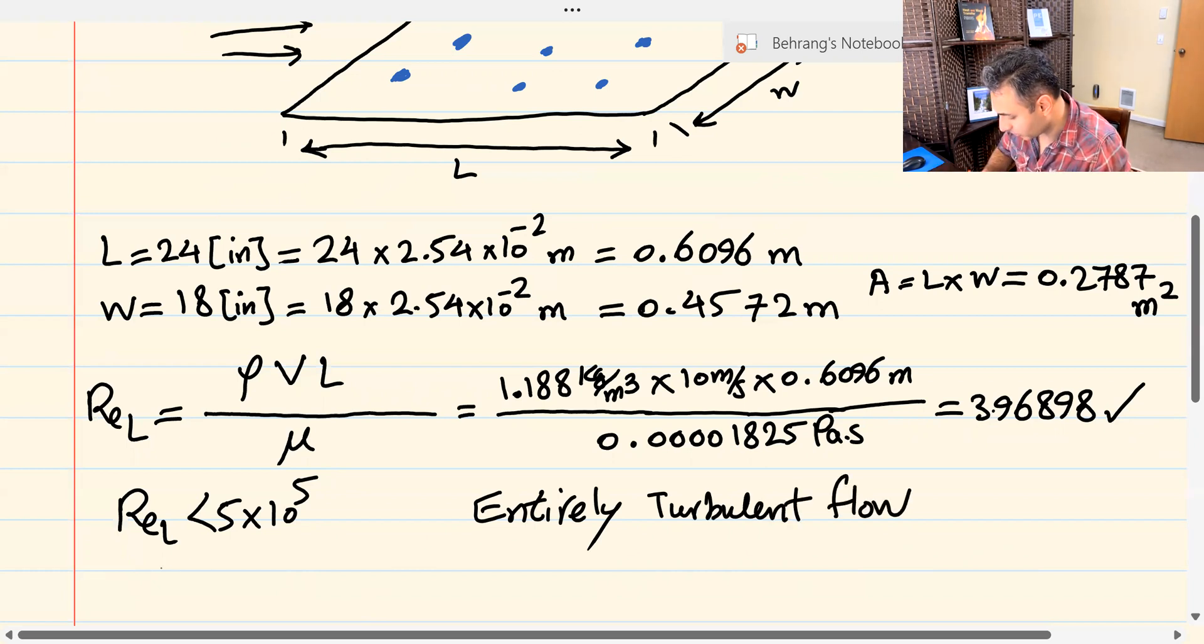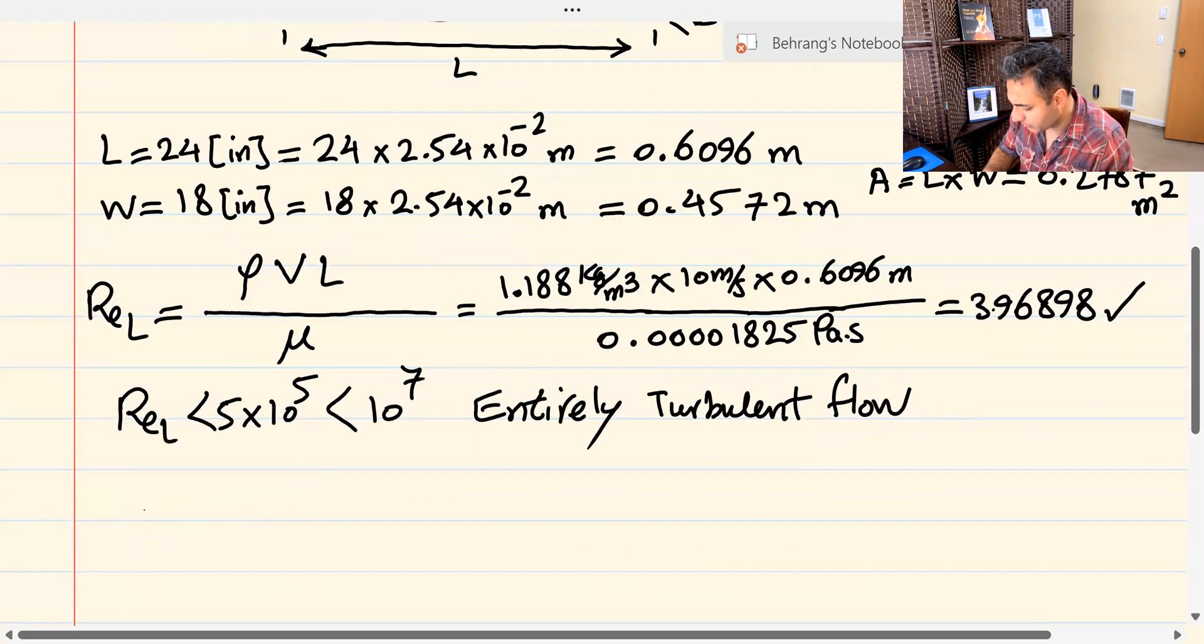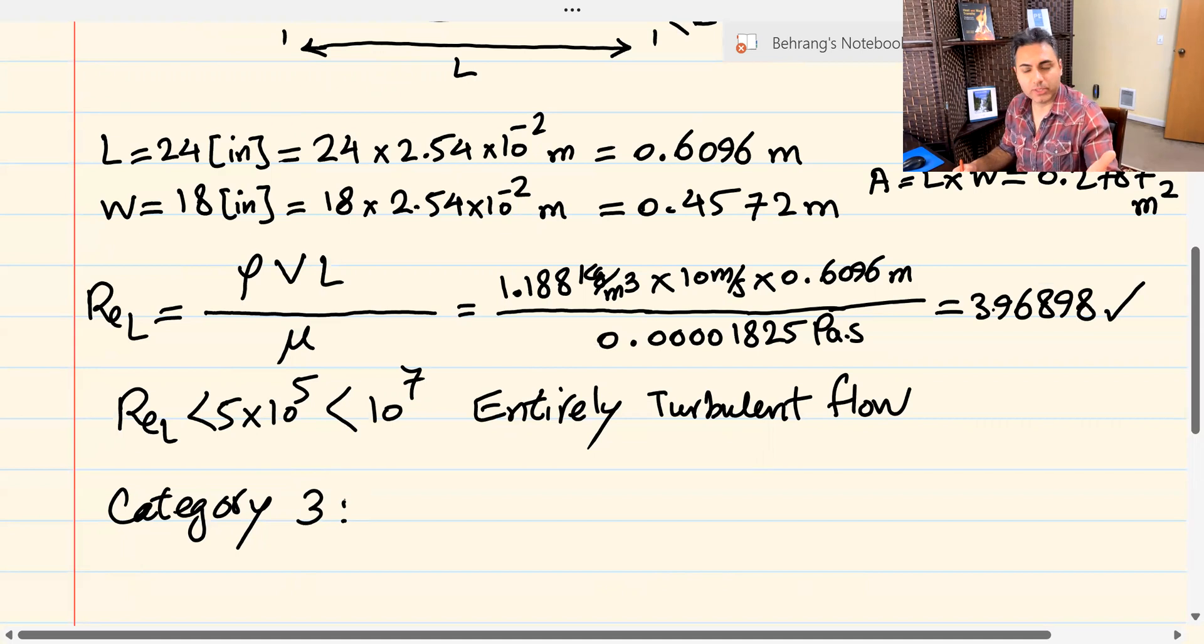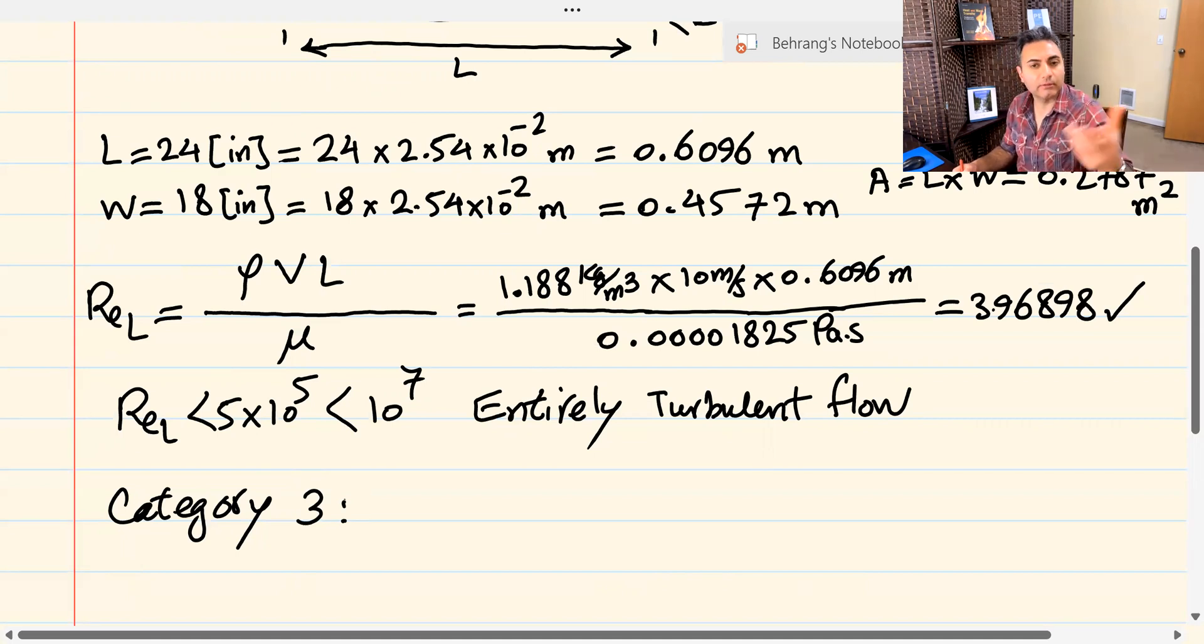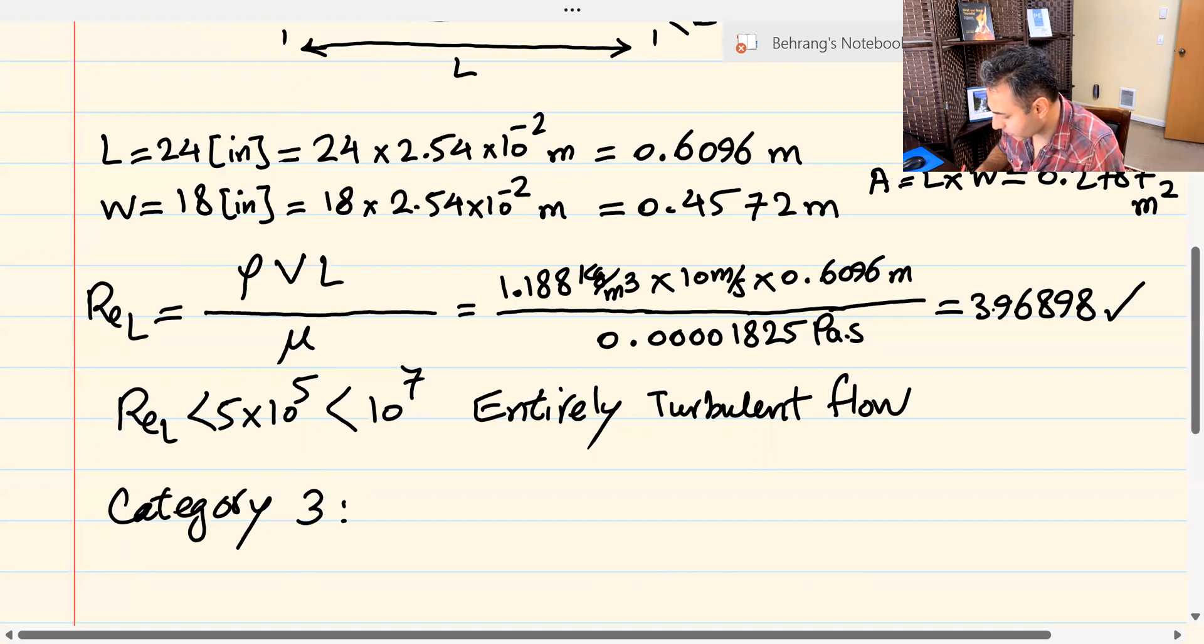This is an entirely turbulent flow. And since Reynolds number is less than 10 to the 7, which is definitely less than 10 to the 7, I can categorize this with a good approximation as category 3. Again, what is category 3? Go back and watch those videos that I provided the link for in the description. And there's a video that I showed all the five categories of external flow over flat plate. So you take a look at that video, then come back here, you'll know what I mean by category 3.